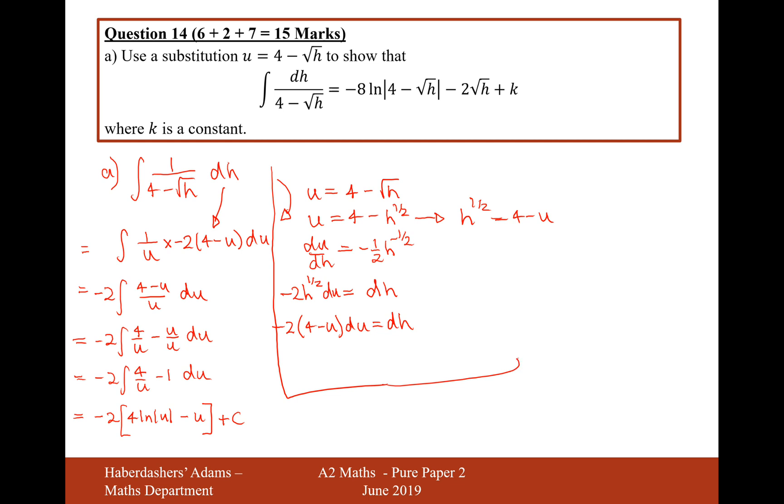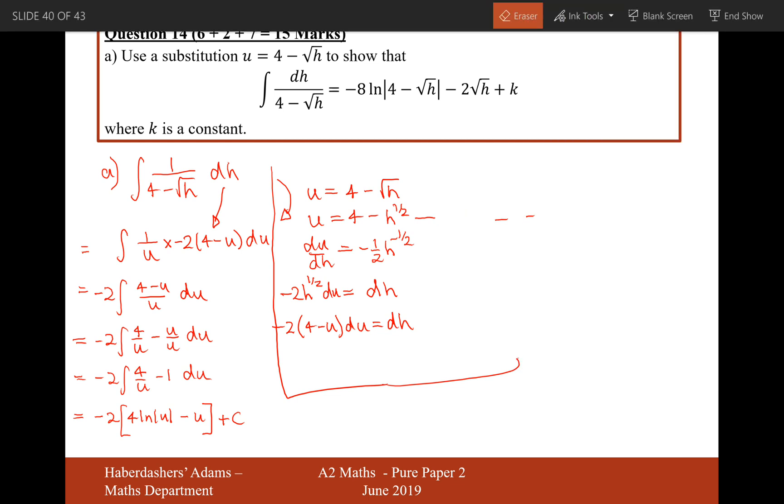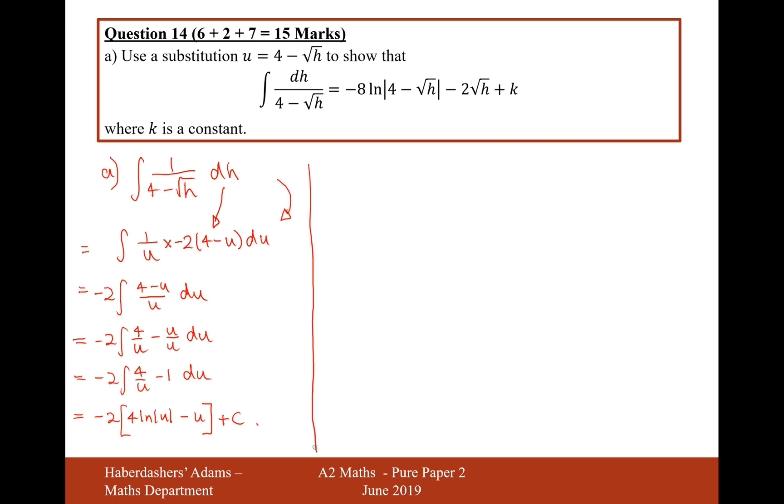So now, if we expand the brackets now, equals minus 8 ln. Now, u is going to be substituted in. u is equal to 4 minus root h. And then it would be plus, by the time we expand the negative, plus 2 lots of u. And u is 4 minus root h, and then we'll put plus c.